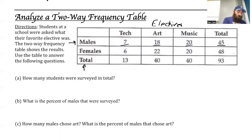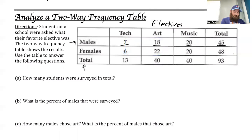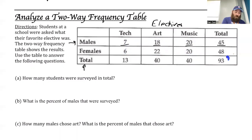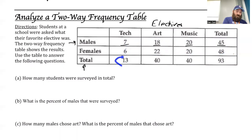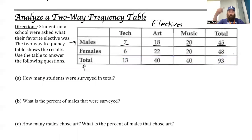Going down between male and female: if we look at tech, 13 preferred tech because that's 7 plus 6. We can add 18 and 22 together, we get 40 that preferred art, and then 20 and 20 add up to 40 that preferred music. This number represents the total number of students surveyed, and we get this in two ways: we can add 45 and 48 together, that is 93, or we can add 40, 40, and 13, and we also get 93. It doesn't matter which way I go — vertically or horizontally — it's still the same number.